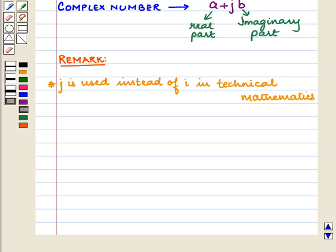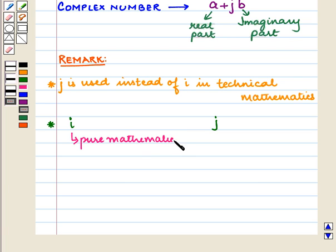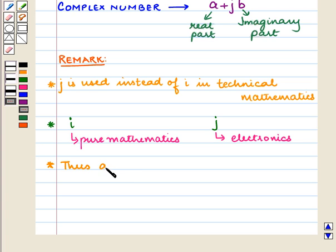J is used instead of I in technical mathematics. I is used in pure mathematics, and J is used in electronics. Thus, A plus JB is the same as A plus IB.